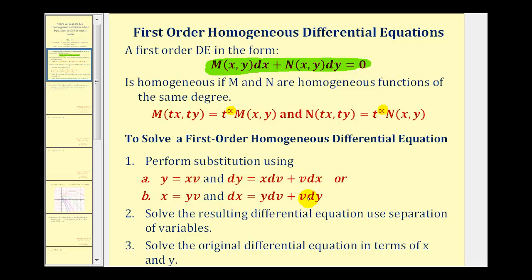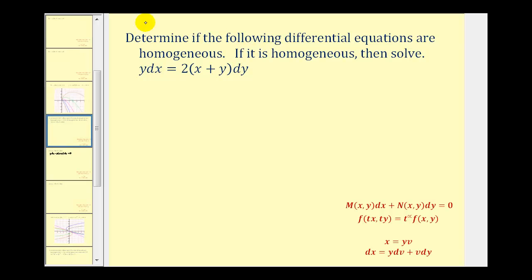Once we perform these substitutions, we can solve the resulting DE using separation of variables, and then solve the original DE in terms of X and Y. Let's take a look at our second example. We first want to put the given differential equation in the correct differential form, and then test to make sure that functions M and N are homogeneous functions of the same degree.